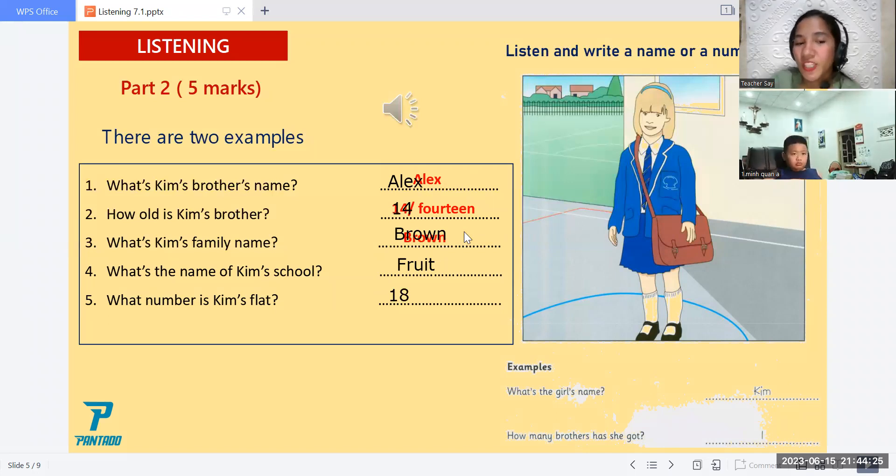And how about number four? Can you read the question? Number four was what's the name of Kim's school? It's fruit. School. What's the name of Kim's school? Yes, the answer here is fruit. Okay, very good again.